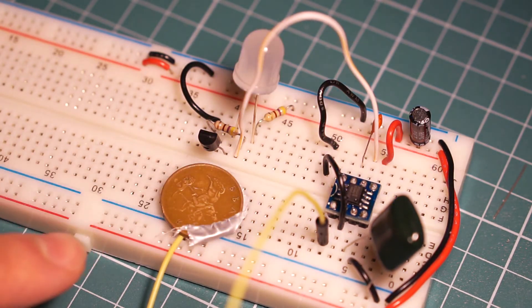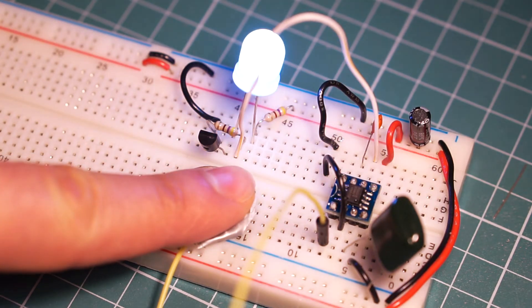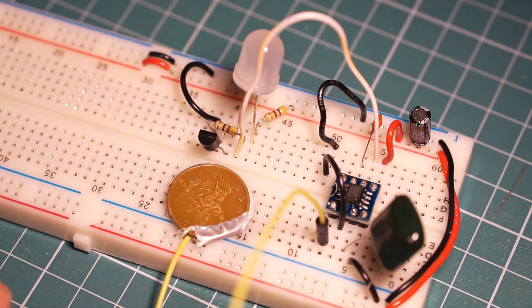Now when I touch the penny, the chip sends a signal to the transistor and that turns the LED on. The chip also detects when I lift my finger and the LED is turned off.